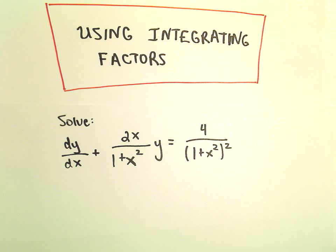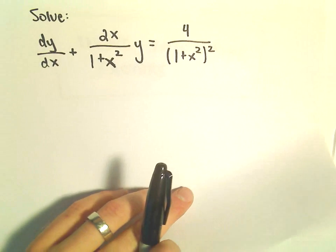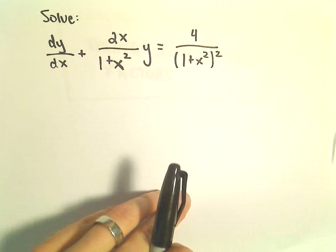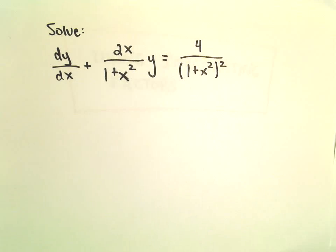Alright, in this video we're going to look at solving another differential equation by using integrating factors. So here we've got dy over dx plus 2x over 1 plus x squared times y equals 4 over 1 plus x squared squared.